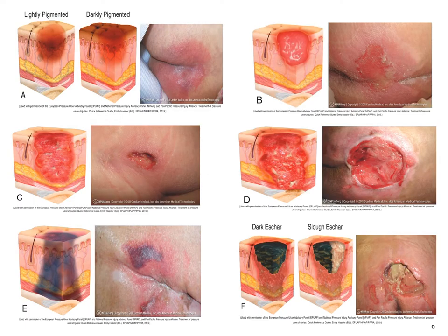A is an example of a stage one pressure injury. B is a stage two. C is a stage three. D is a stage four. E is a deep tissue injury. And F is an unstageable pressure injury.